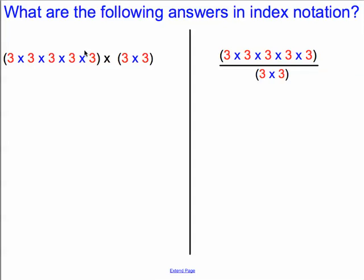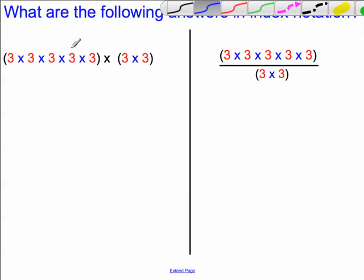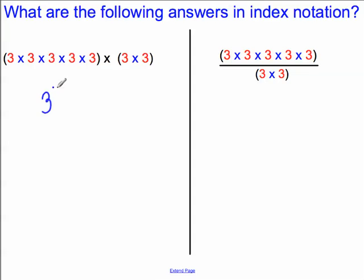First of all, consider this multiplication on the left-hand side here. We've got 3 multiplied by 3 multiplied by 3 multiplied by 3 multiplied by 3. That's the base number 3 multiplied by itself 5 times, so this would be 3 to the power of 5, multiplied by the base number 3 multiplied by itself twice — 3 squared.